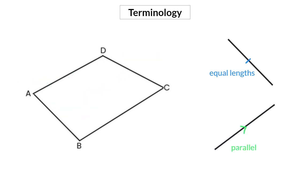In Grade 9, we now also focus on the diagonals. A diagonal is drawn from one angle to the opposite angle, so in a quadrilateral we can draw two diagonals. We will be focusing on the lengths of these diagonals, and also on their point of intersection and how that point divides these lines.